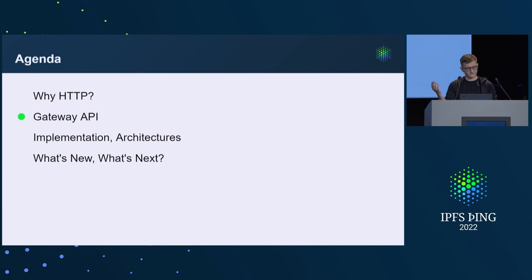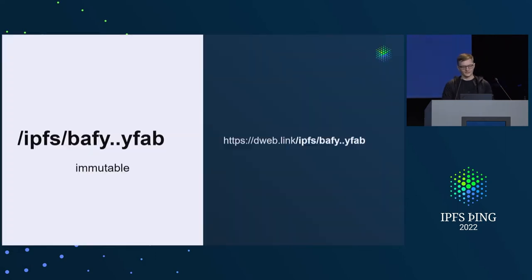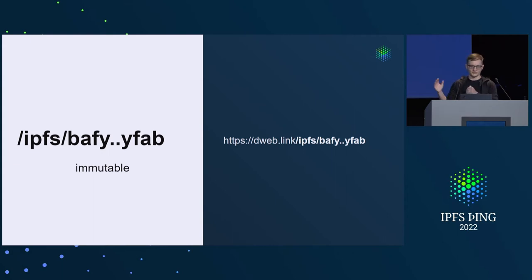Let's talk about the Gateway API. My personal belief is that the best API is no API — or rather, an API you don't even see as an API. On the Gateway, we don't have a specific API because we have a content path and you just request that content path. You have an immutable namespace for IPFS, a CID content identifier, and you ask for that specific path on the Gateway. That's it. That's the API.